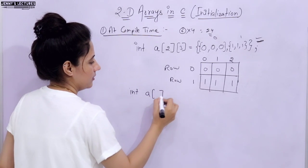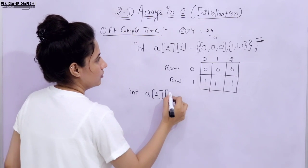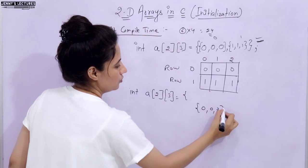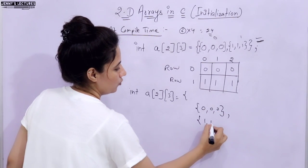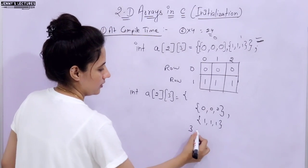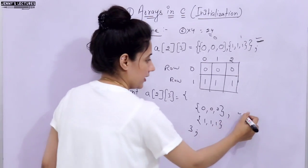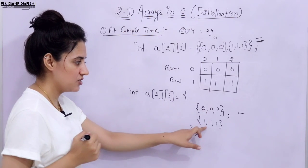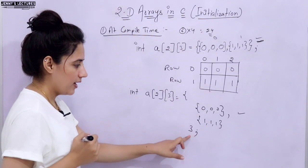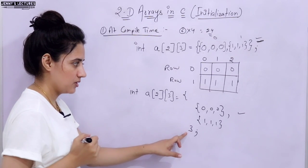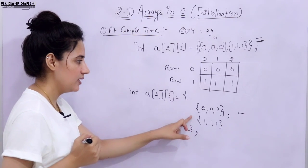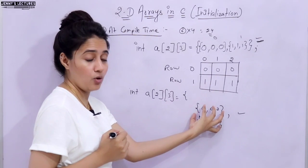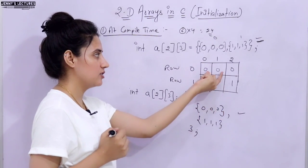You can also write it in matrix form: int a[2][3] with values written across multiple lines — the first row on one line and the second row on the next line, then close the braces. This is also correct. However you write it, the data would be stored in memory the same way — first row followed by second row.